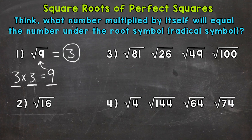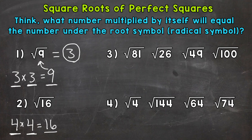Let's move on to number 2, where we have the square root of 16. What number multiplied by itself equals 16? We know 4 times 4 equals 16, so the square root of 16 equals 4. And that's our final answer.